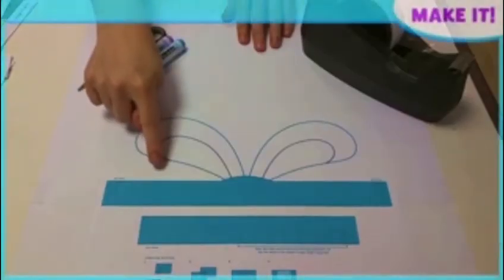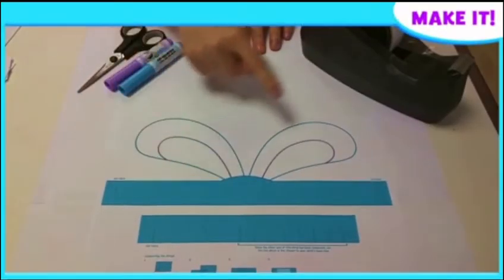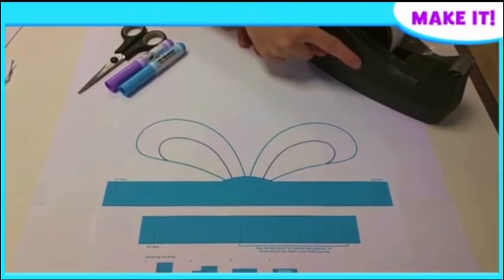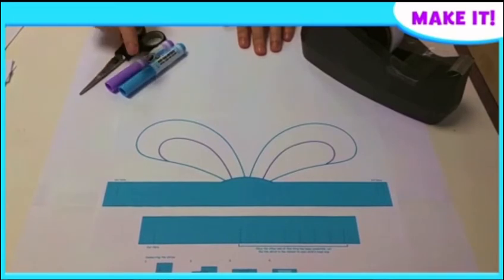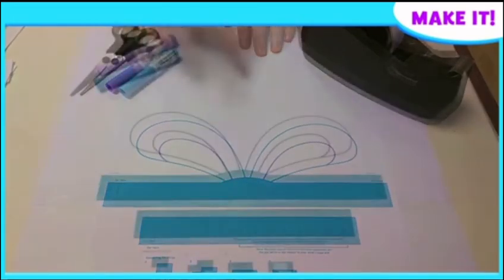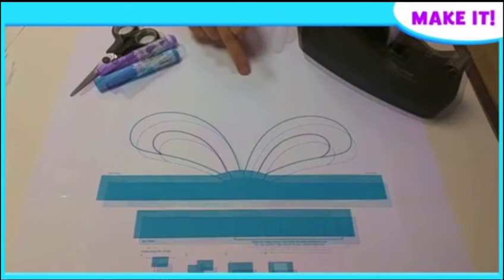You will need an A4 printout of the Raggles Ears template, sticky tape, safety scissors, crayons, pens, pencils or felt tips, and an additional A4 sheet.